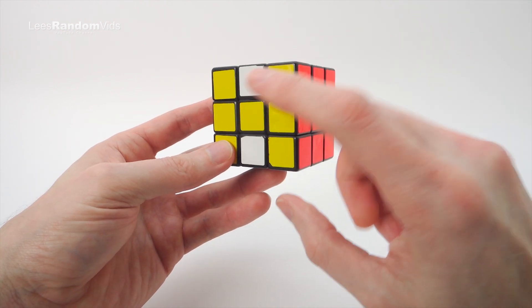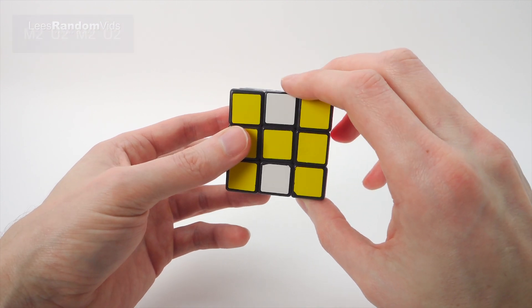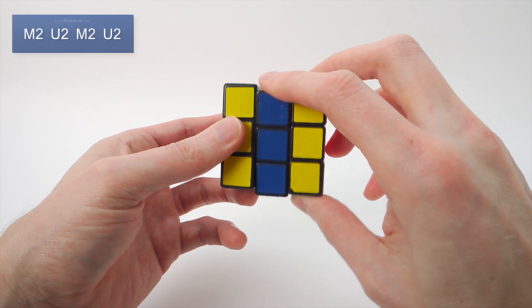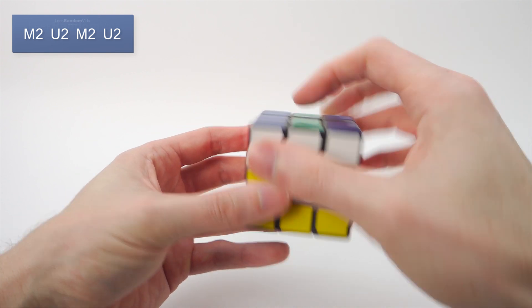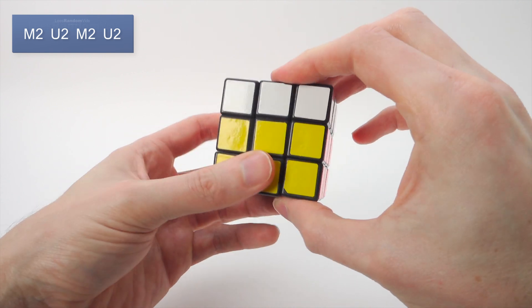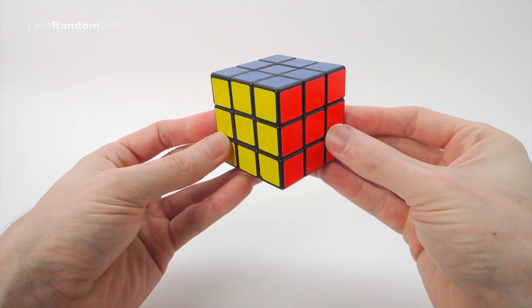So to undo this pattern you want the H on the front first here, and just repeat the same algorithm. So we go M2 U2 M2 U2, and now we're back to a solved Rubik's Cube.